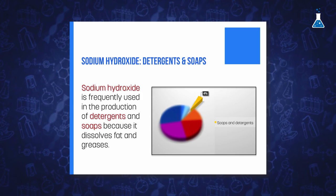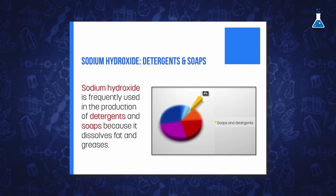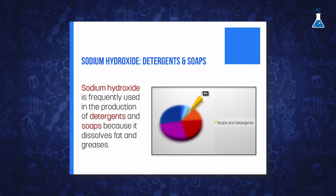Sodium hydroxide has significant use in the production of detergents and soaps, and because it dissolves fat and grease, it is often poured down in household drains to unblock them.